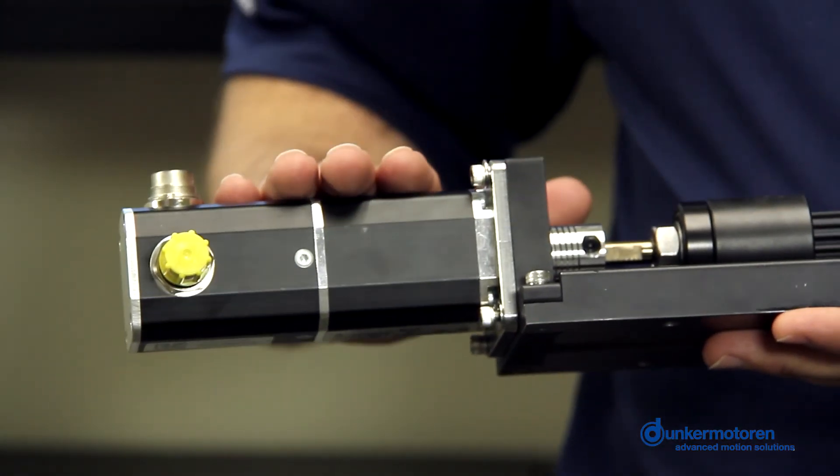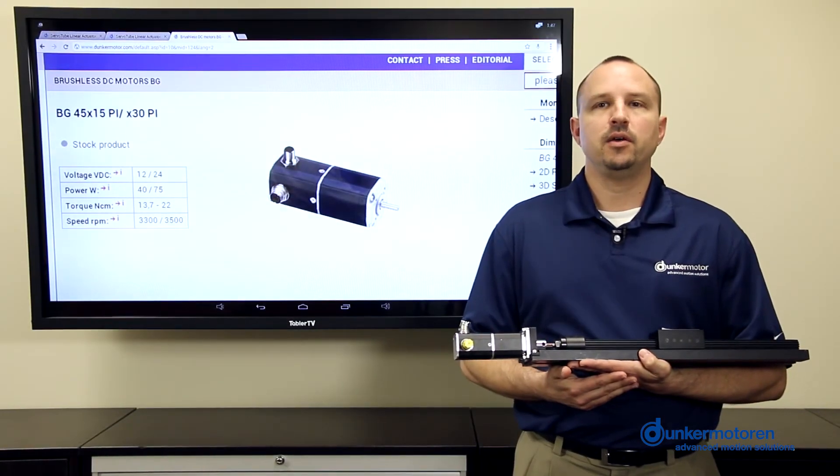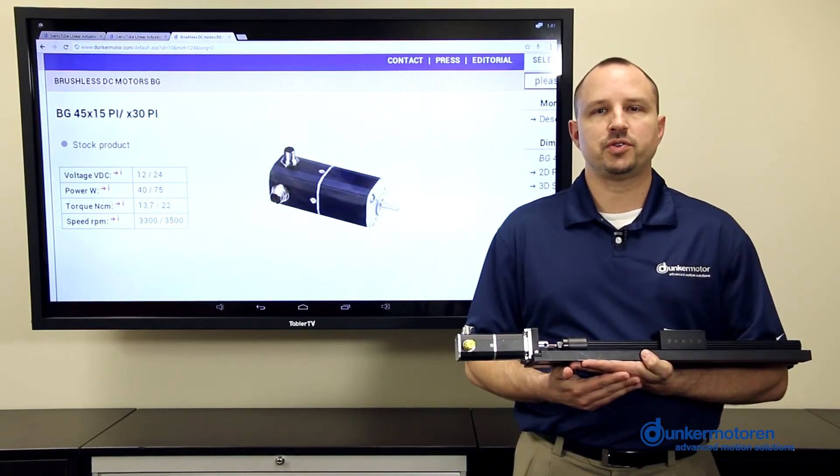The BG45 PI motor has its own built-in drive and control electronics, making a separate external motion controller unnecessary.